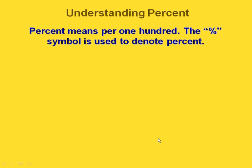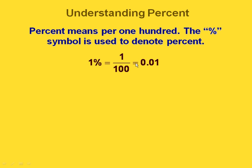First of all, with percents, we just need to understand what a percent means. A percent just means per 100. So if we have 1%, that's the same as saying 1 over 100. And if we went ahead and divided this, we would actually get 1 hundredths written in decimal form.